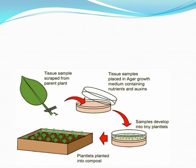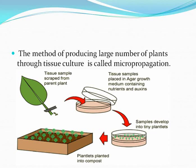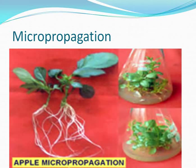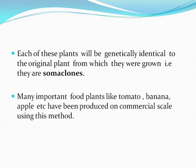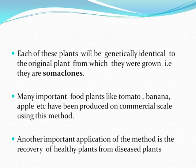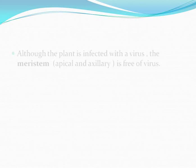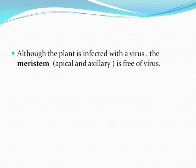This method of producing large numbers of plants through tissue culture is known as micropropagation. Apple micropropagation is one example. Each of these plants will be genetically identical to the original plant from which they were grown — they are soma clones. Many important food plants like tomato, banana, and apple have been produced on a commercial scale using this method. Another important application is the recovery of healthy plants from diseased plants. Although the plant may be infected with a virus, the meristem — i.e., apical and axillary — is free of virus. If the meristem is removed and grown in vitro, virus-free plants can be obtained.